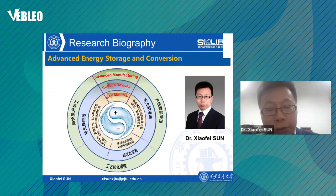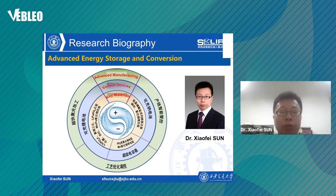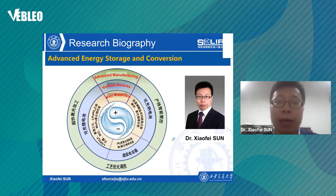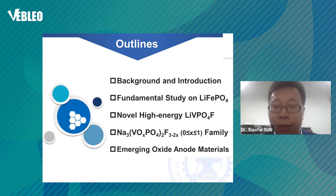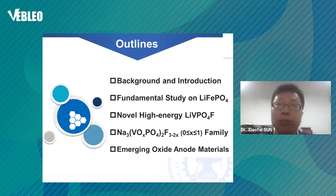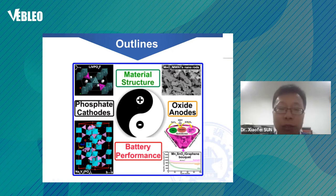Recently, we have also launched several projects on battery manufacturing technologies — for example, laser-assisted processing and intelligent manufacturing to get good quality battery cells. As indicated by my presentation title, today I would focus on the cathode and anode active materials for rechargeable lithium or sodium batteries, especially phosphate cathode materials and oxide anode materials.